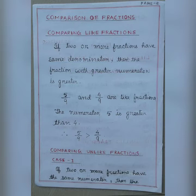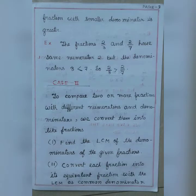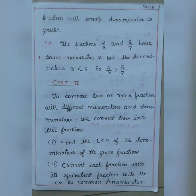Comparing unlike fractions — Case 1: if two or more fractions have the same numerator, then the fraction with the smaller denominator is greater. For example, 2 by 3 and 2 by 7 have the same numerator, but the denominator 3 is less than 7, therefore 2 by 3 is greater than 2 by 7. Remember: greater the denominator, smaller the value.